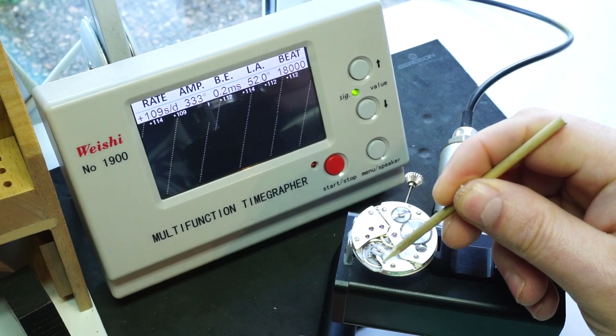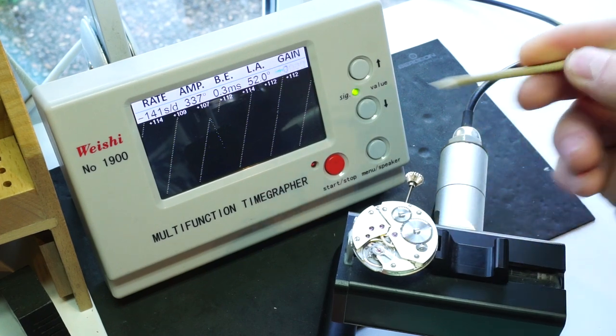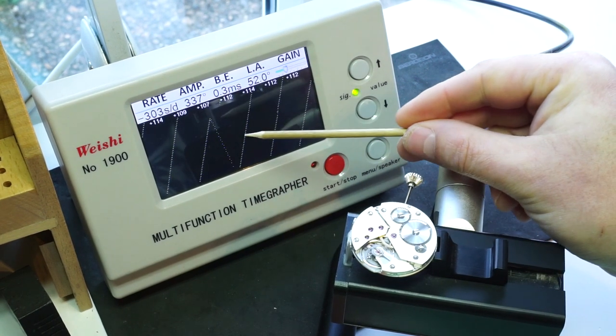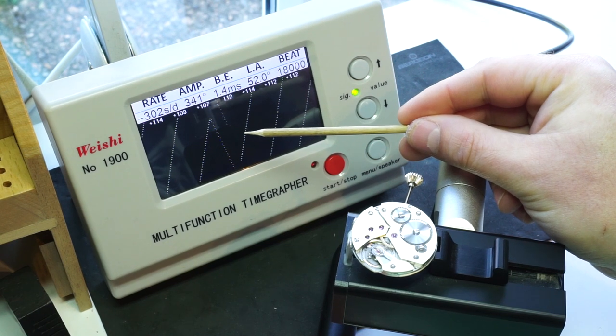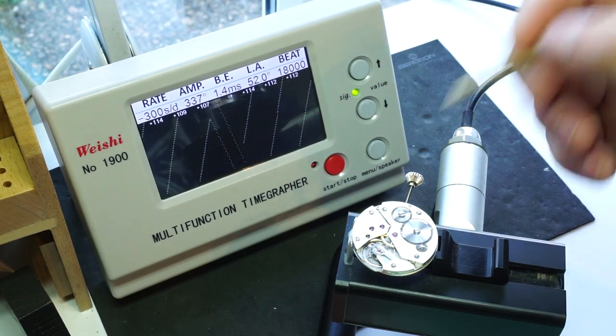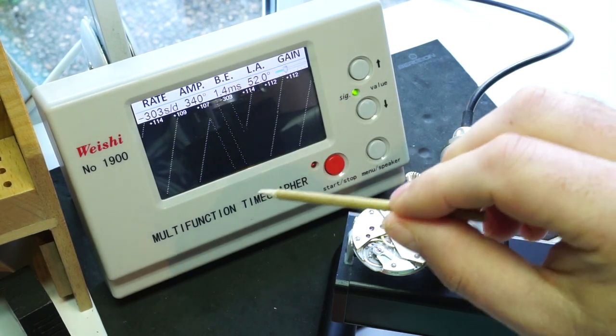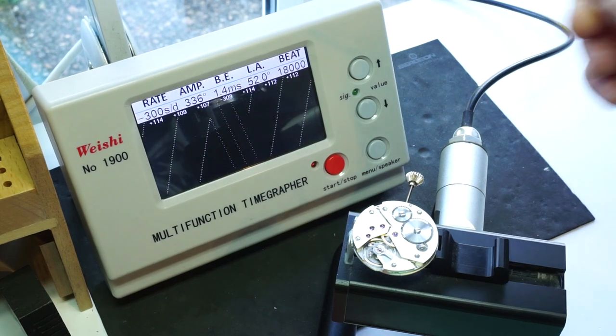If we were to push this regulator all the way across to the opposite side, we can see on the graph here that the rate has now dropped to minus 300 seconds, which is really bad. So we're going to adjust the regulator until we get a nice pair of reasonably flat lines and a good rate.